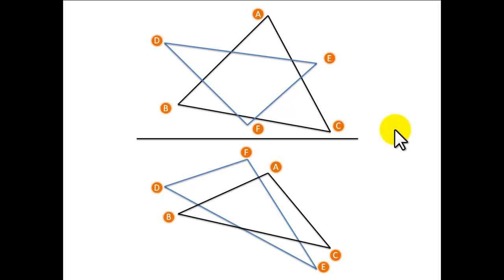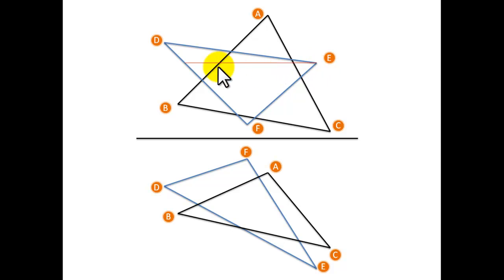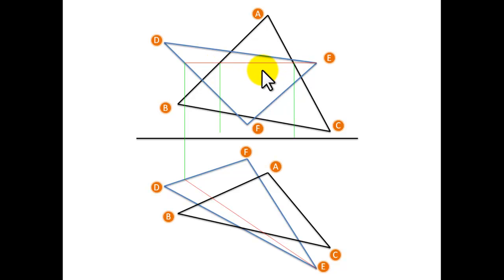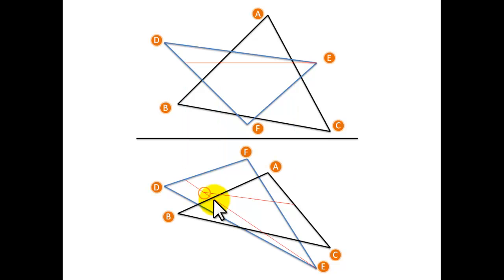We draw a horizontal line that cuts the two planes, bring these points down to our plan, and find where these cross to get a point on the line of intersection. We are going to draw a line from E that cuts the two planes. On plane DEF it cuts at corner E and along the line DF. So we bring this point down to our DF and join it back to E. On plane ABC it cuts here and here, so we bring these two points down to our plan and join them together. You will find that they do not cross our first line, so we extend these until they do and find this point - that is one point on our line of intersection.